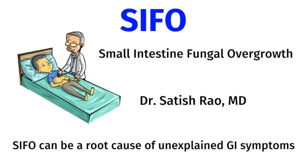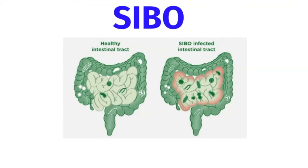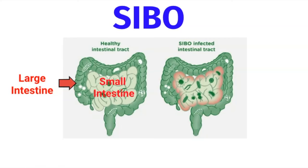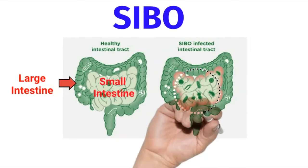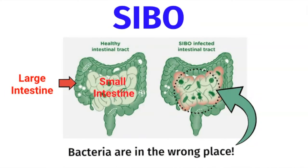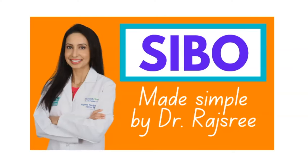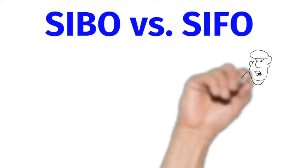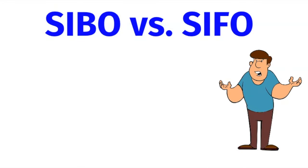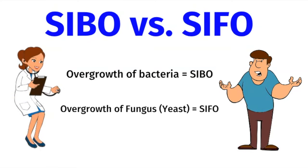How many of you have heard of SIBO, which stands for small intestine bacterial overgrowth? Normally, the small intestine does not have a lot of bacteria because its job is to absorb nutrients from your food. Most of the bacteria are located in the large intestine or colon. If bacteria overpopulate the small intestine, this is called SIBO, and it can cause gas and bloating every time you eat. SIBO is a big root cause of IBS. Now, what's the difference between SIBO and SIFO? An overgrowth of bacteria in the small intestine is SIBO, whereas an overgrowth of fungus in the small intestine is SIFO. A lot of patients actually have both conditions.